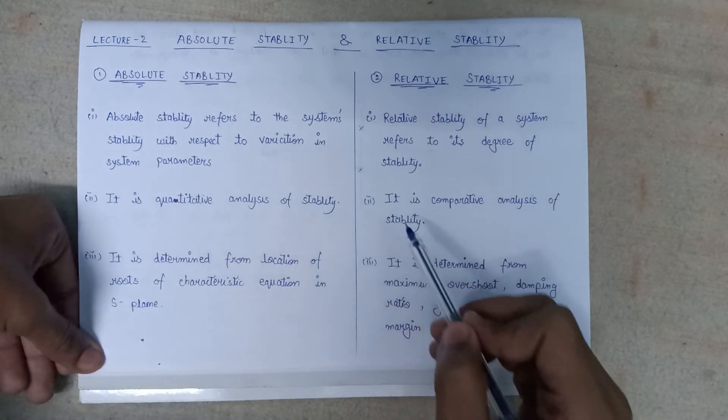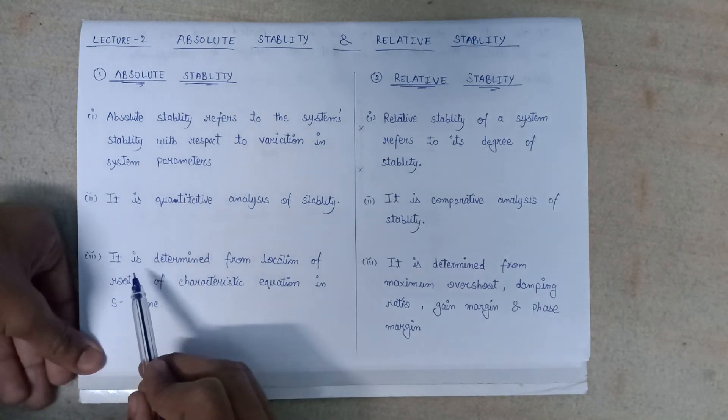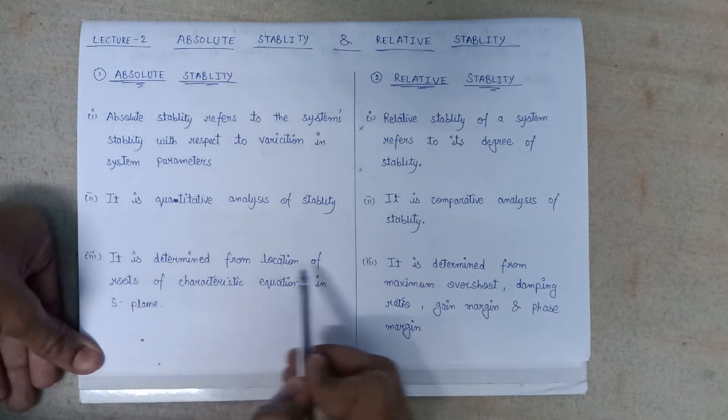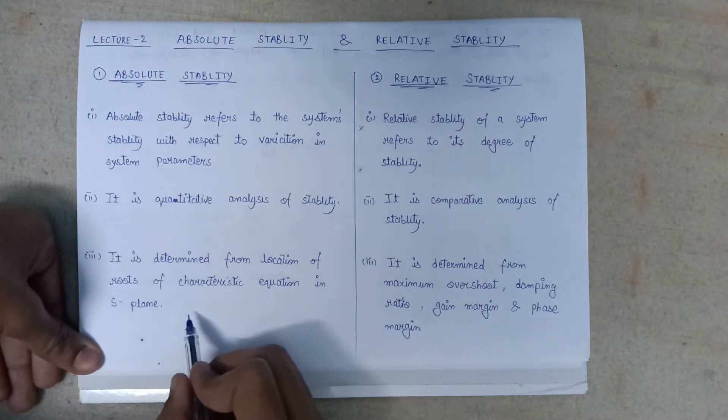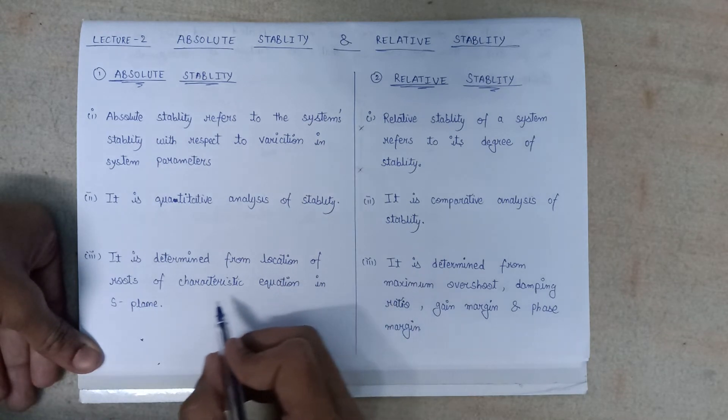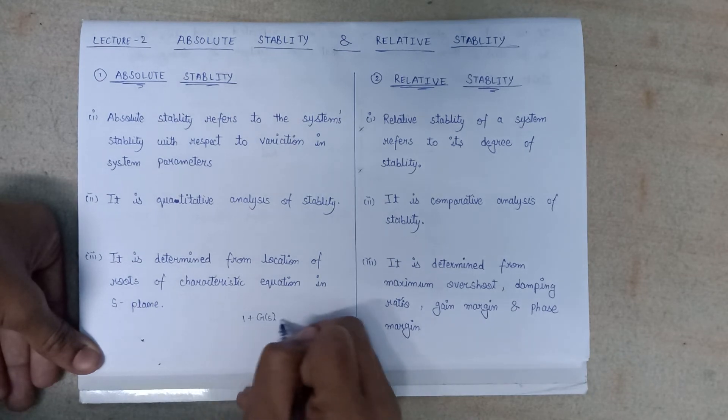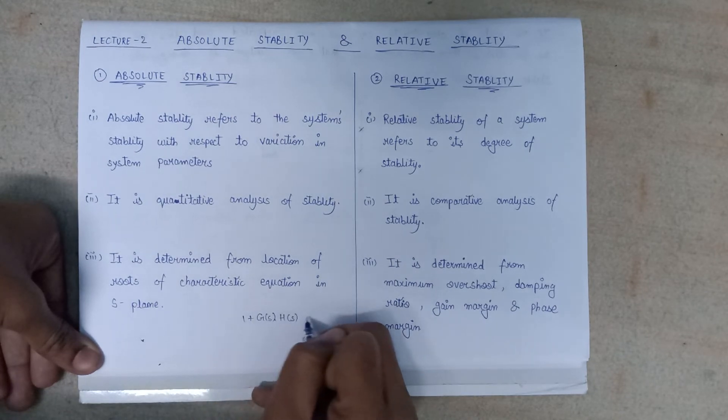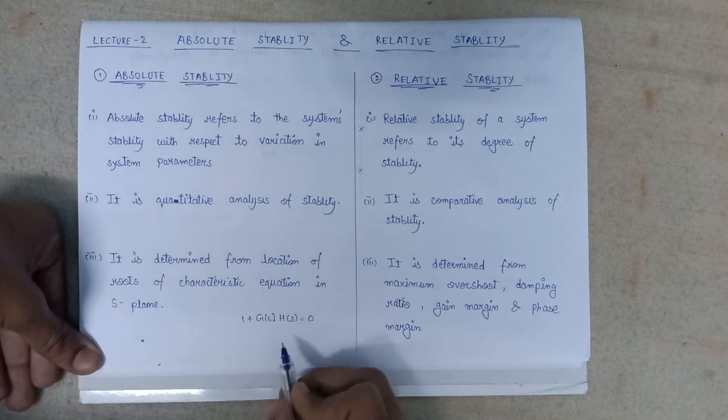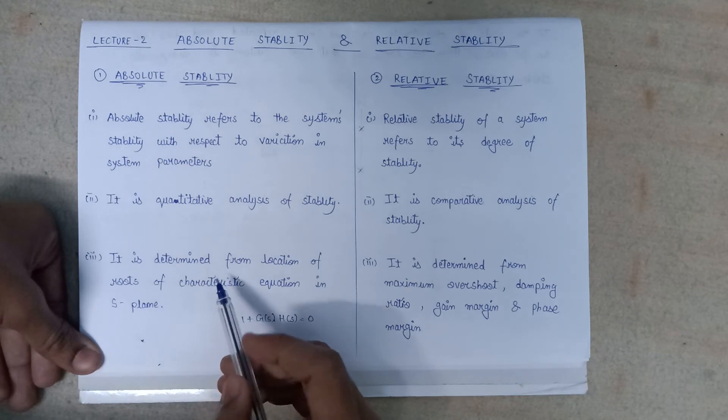Going to the third point, the absolute stability is determined from the location of the roots of the characteristic equation in the s-plane. So it can be determined by finding the roots of the characteristic equation, that is 1 + G(s) × H(s) equals to zero. After finding the roots, if we plot it onto the s-plane, then we can easily determine the absolute stability of a system.